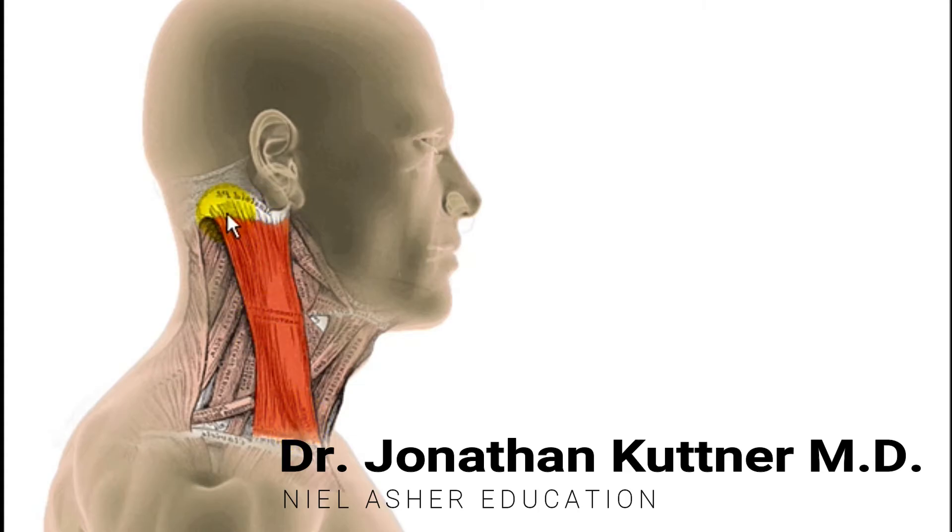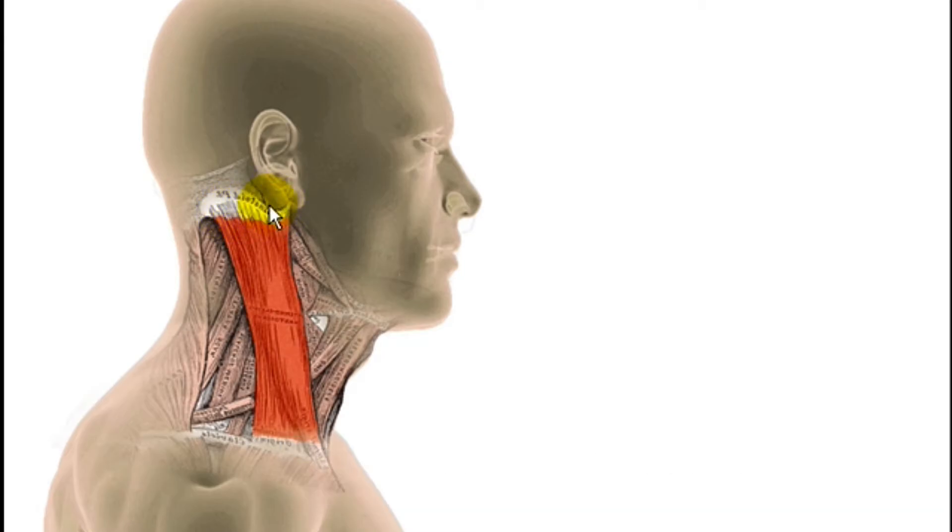The muscle inserts into the mastoid bone and you can see it's a very short tendon and quite a broad insertion. Then it divides into two separate divisions. The first runs more superficially and attaches here into the sternum, which is the breastbone.